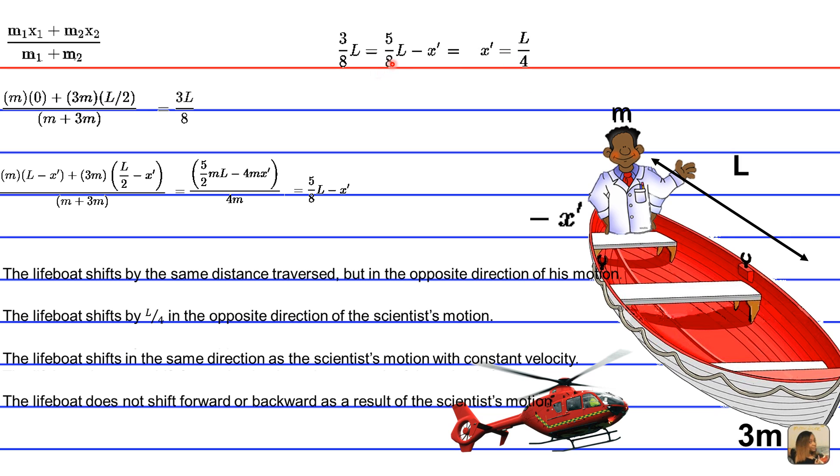And the way this simplifies is that we carry the x prime over to the left-hand side by adding it to both sides and getting rid of the negative. And then we just subtract 3 over 8L from the right-hand side. So that's why we get 2 over 8L or L over 4.